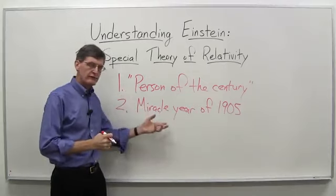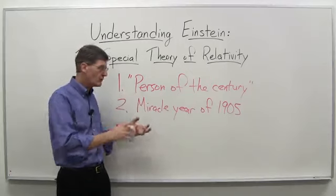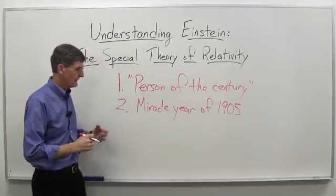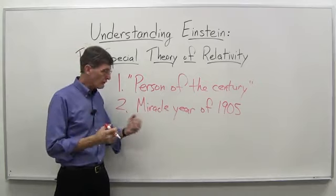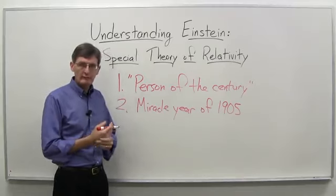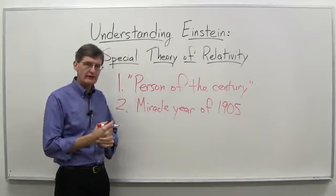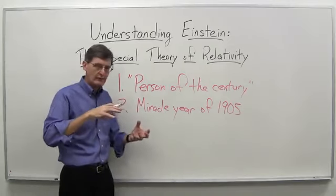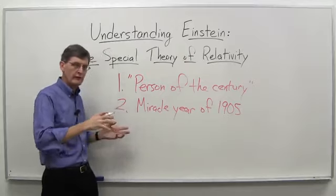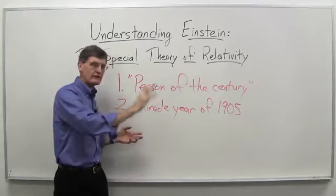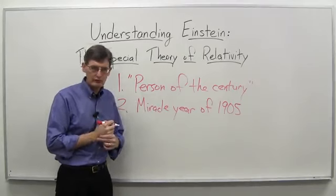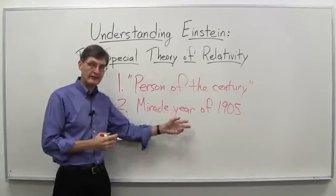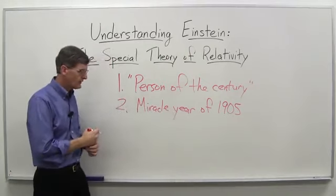And in 1905, he published five papers, almost any one of which could have made his career as a physicist. To give you an idea, one of those five papers dealt with the quantum nature of light, really introduced the idea that light maybe was more than just a wave, but that it had particle-like aspects to it. So really, that was the paper that kicked off what later became known as the quantum revolution in physics in the 20th century. And it was a very controversial idea at the time and for a number of years after that as well.